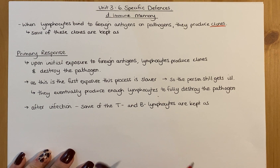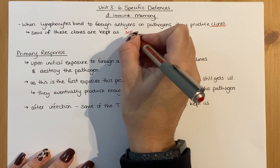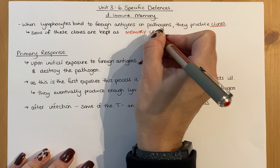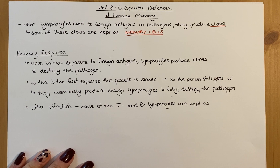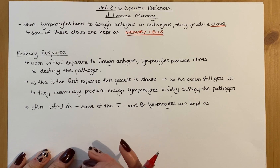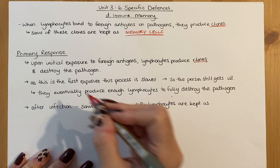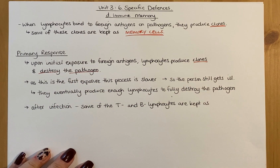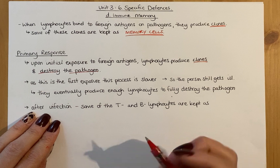The important thing is that for you to be able to fight that infection again in the future, some of those clones need to be kept as memory cells. It's key that those cells are kept in circulation in the body in case you come into contact with that antigen and pathogen again. When you first come into contact with a pathogen, your initial exposure causes the lymphocytes to produce clones and destroy it, but that first exposure is quite slow.